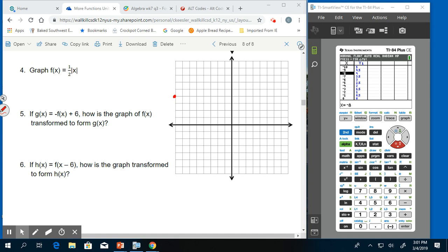Then negative 6, positive 3. Then negative 4, positive 2. Then negative 2, positive 1. Notice how I'm going down 1 over 2, down 1 over 2, kind of like slope. And then 0, 0.